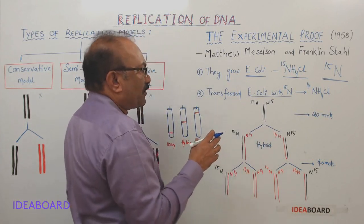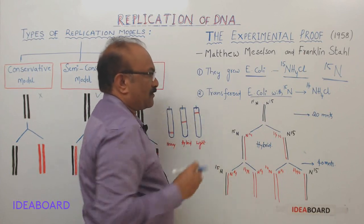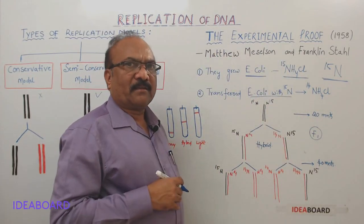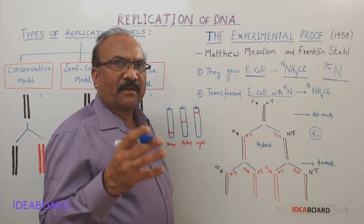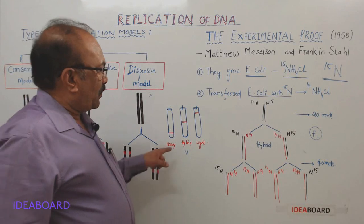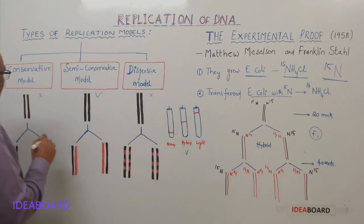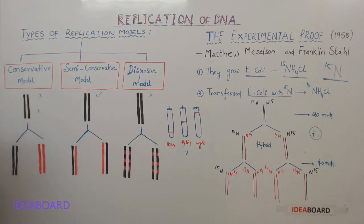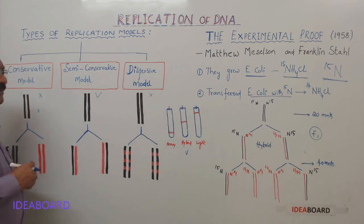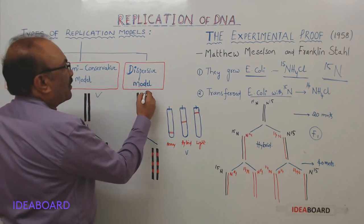In the first generation (F1), they found only hybrid DNA. With this result, they ruled out the conservative model — because if it were conservative, hybrid DNA should not be formed; instead, both light DNA and heavy DNA should be present. So the conservative model was ruled out, and the question remained whether it is semi-conservative or dispersive.